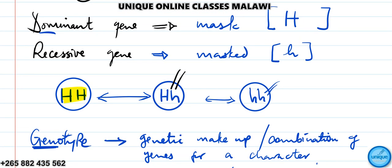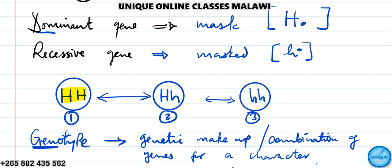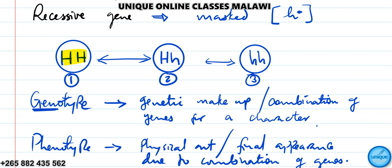For example, using capital H and small h, we can form three combinations — three genotypes: HH, Hh, and hh. These are our genotypes — combinations of genes. The physical appearance that results from these genotypes is our phenotype.